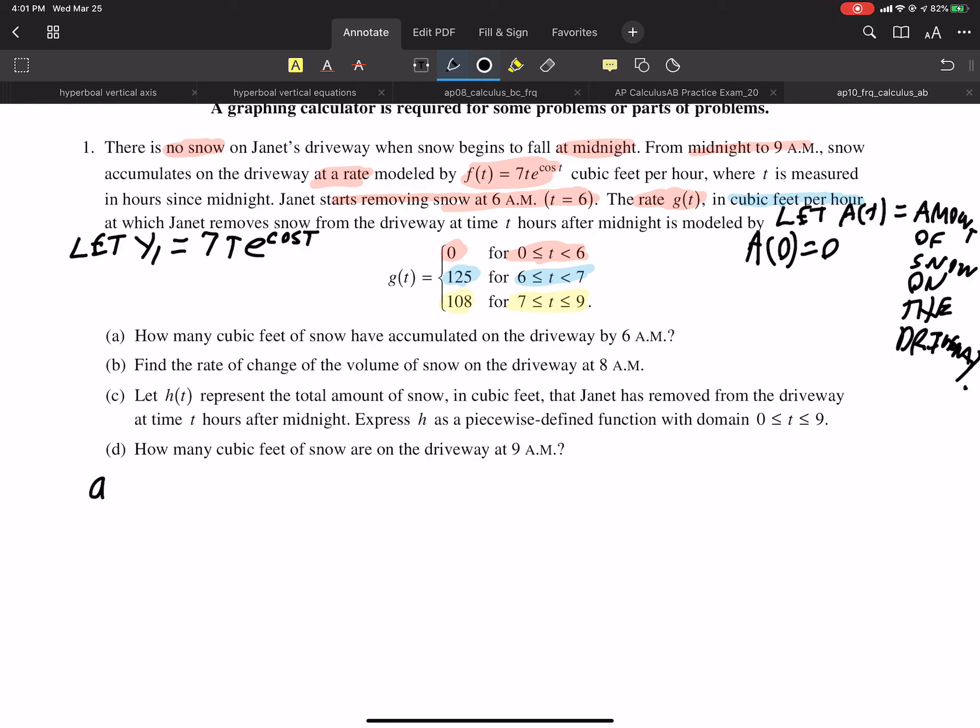And so, let's get to the heart of the question. Part A. How many cubic feet of snow have accumulated on the driveway by 6 a.m.? So there's no snow to start with. So, basically, we want A at 6. But let me back up here. Before we get that, I can do it up here. We want a function for the amount of snow on the driveway. Anyway, and again, I should give myself some room. I will do it here.